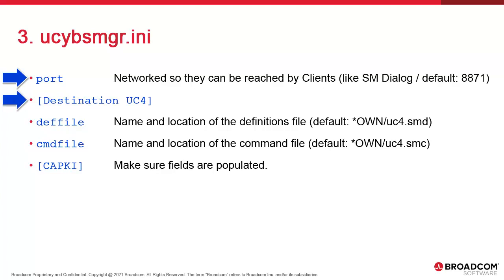Then we have the Destination section. Destination can be any term. By default, it's been set to UC4 for decades, and there's really no need to change it. Inside the section, you find two settings — Def file and CMD file — which are the names and locations of the definitions and command files respectively. Note the star-own naming, which points to the current directory. The use of star-own is widespread in atomic configuration files, and you can keep it this way.